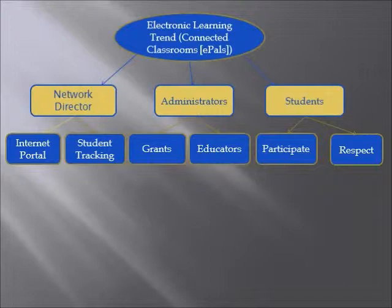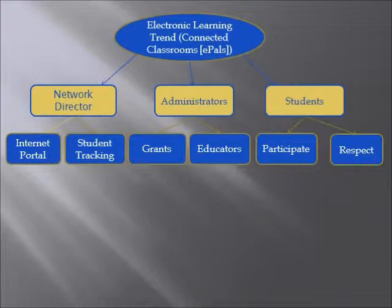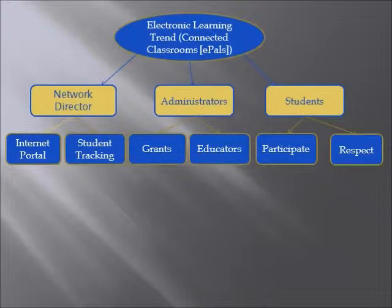With my third slide, I've maintained the grayscale background theme. The topic header is still in a blue oval with a gold border and white lettering inside. Following down to Network Director, which is still a gold box with a blue border, below Network Director there are two boxes: the first one is Internet Portal and the second one is Student Tracking. Both of these boxes are blue with a gold border and I've used white lettering on them.